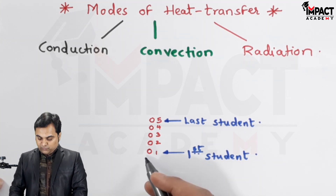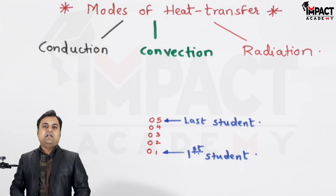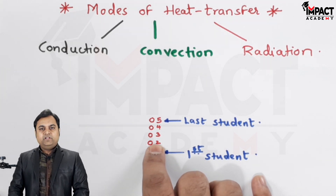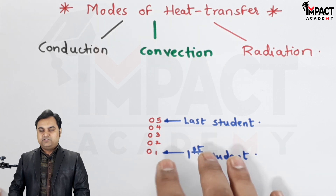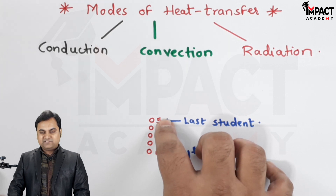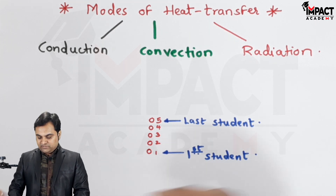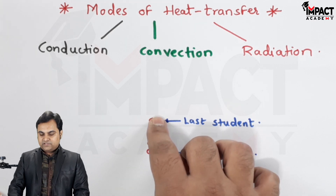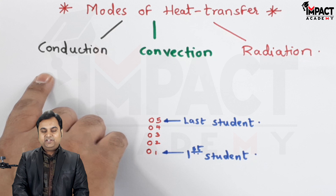The instruction is that the first student should transfer a book to the last student. One method is that the first student passes the book to the second without moving from their place, the second passes to the third, the third to the fourth, and the fourth to the fifth — all without leaving their places. Similarly, in conduction, heat molecules do not leave their place but transfer heat from one molecule to another. This is called conduction heat transfer.